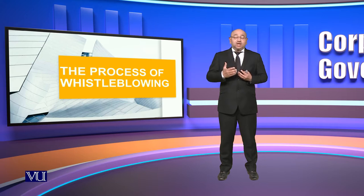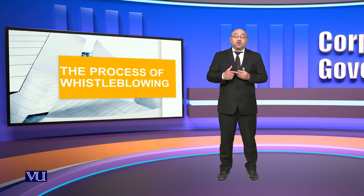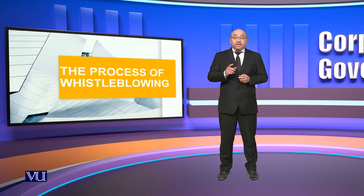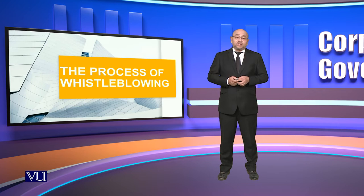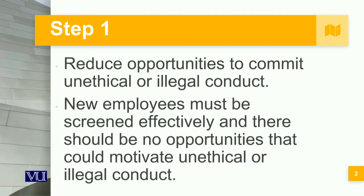The purpose is so that whistleblowing can be institutionalized and considered in the right way, so that the consequences do not adversely affect the organization but are considered more of a corrective action. It should not be based upon retribution, adversity, or enmity. Today we are going to look at the process of whistleblowing, which has five different steps.